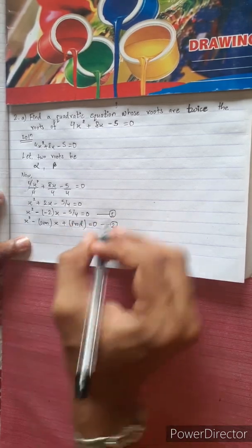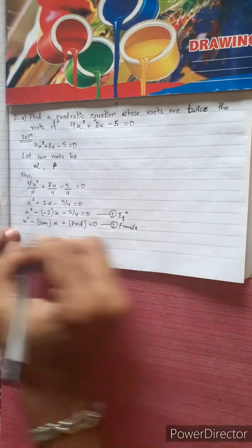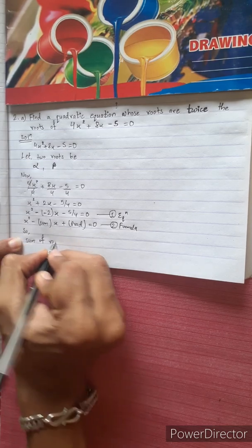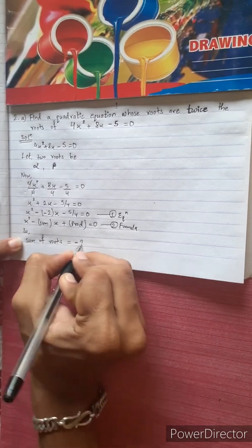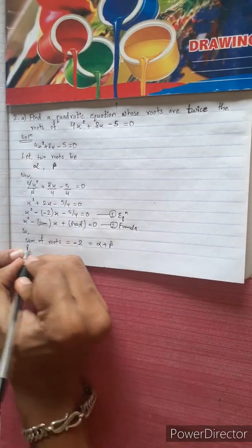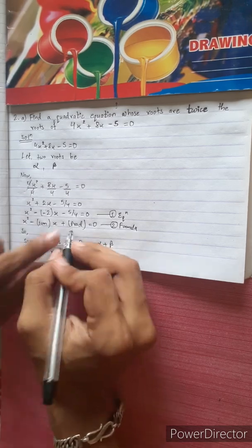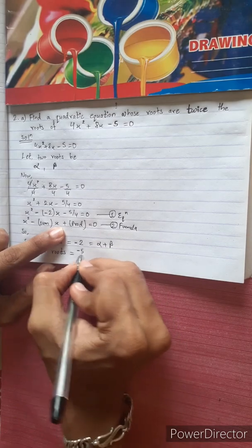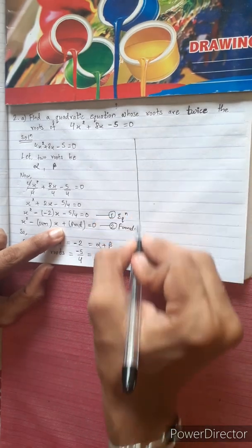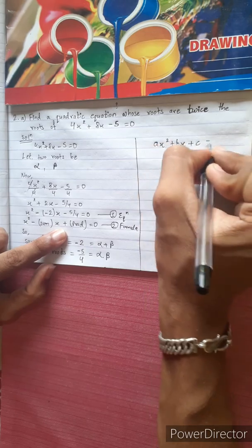This is our equation and formula. Direct from the equation, sum of roots alpha plus beta equals minus 2, and product of roots alpha into beta equals minus 5 by 4.